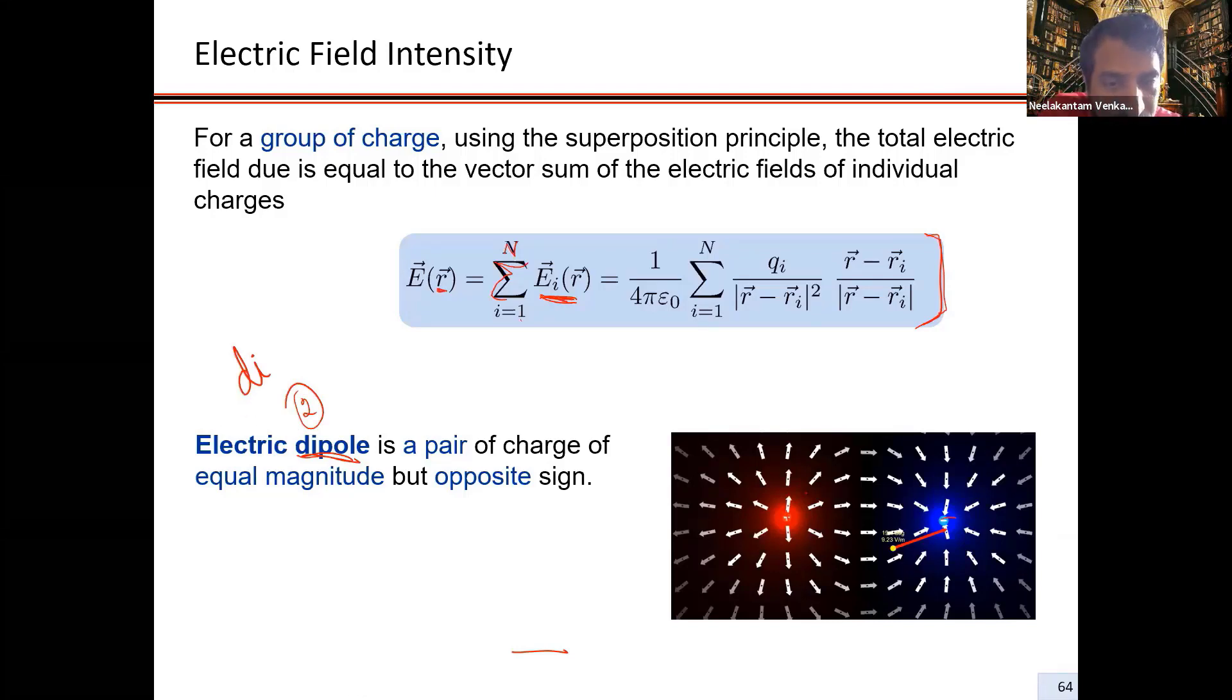If I were to bring in a plus charge here, it's going to repel from the positive charge. As it repels out, it starts to see the negative charge who is going to attract it. If it had been just the positive charge alone, it would have gone radially out. But because of the negative charge,